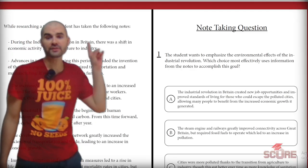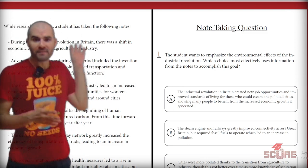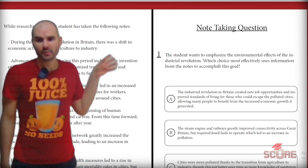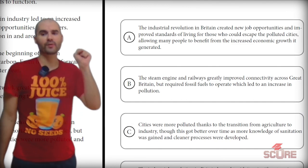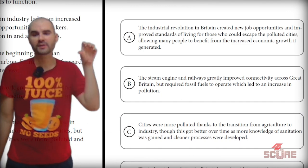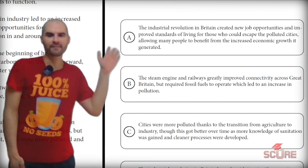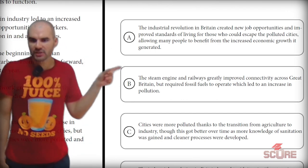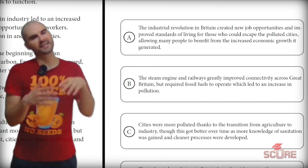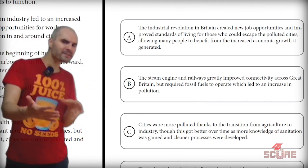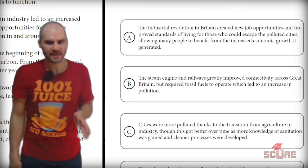Final question: the student wants to emphasize the environmental effects of the Industrial Revolution. A says the Industrial Revolution in Britain created new job opportunities and improved standards of living — that is wrong, not focusing enough on the environment. B mentions the steam engine and railways greatly improved connectivity but required fossil fuels — again, focusing on the positive before getting to the environmental part. I don't think A or B are correct.